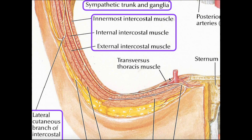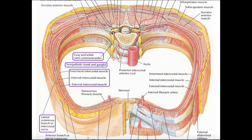That covers the nervous part — the origins and branches of the intercostal nerve. One thing to note is that the intercostal nerve really has only one origin: the spinal cord. There's nothing anteriorly from which it can originate. The reason I mention that is because the intercostal arteries are a little different — they have two origins, meaning we're going to have a posterior intercostal artery and an anterior intercostal artery.